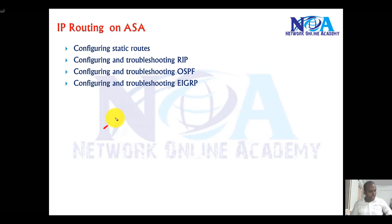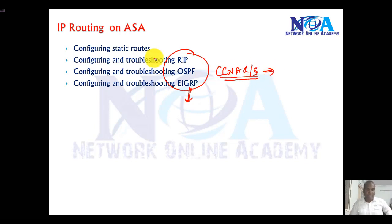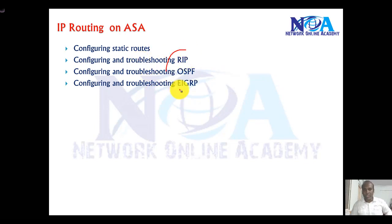The next thing we will see on the ASA firewall is the basic routing configurations. At this point I expect you to know the basic concepts of routing, so I'm not going to cover what routing is or the different types. Most of these things you already did in CCNA Routing & Switching. In this section we'll only see the configuration changes or differences in commands on the ASA firewall compared to router configurations.